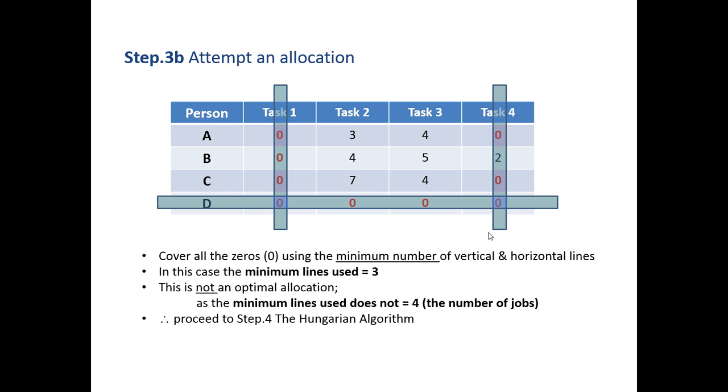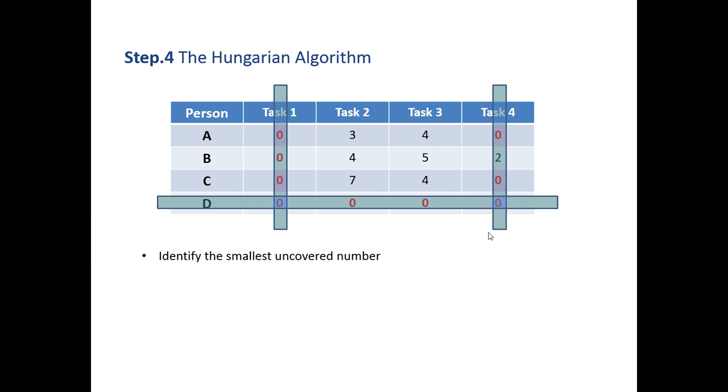We now again attempt an allocation. We can use two verticals and one horizontal, which gives us three lines to cover all the zeros. Is this an optimal allocation? No, because we're using fewer lines than there are tasks. If this were optimal we would need four lines. We can do it in three, so we need to continue. We've done a row reduction, a column reduction, and checked the allocation after each. We now go to the third step, which is the Hungarian algorithm.